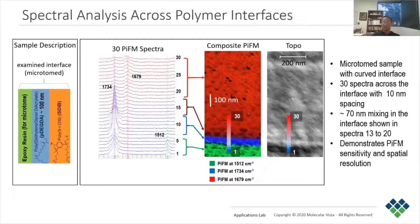We then see a gradual decrease from spectrum number 13 until it reaches a steady state level at about number 20, consistent with the gradual change in color observed in the chemical map image. We can see that each spectrum displays gradual changes in the three peaks used for chemical mapping, indicating that PIFM can measure local chemical information with at least 10 nanometers spatial resolution.